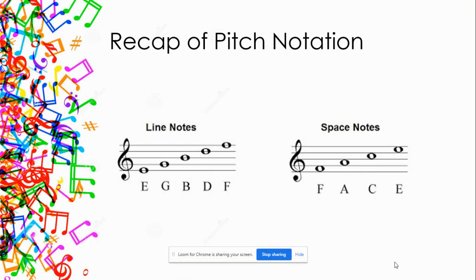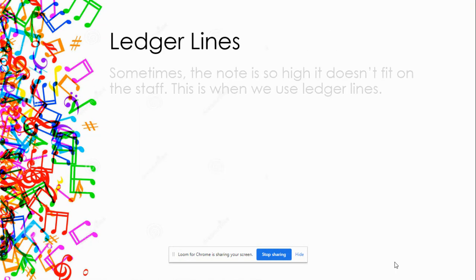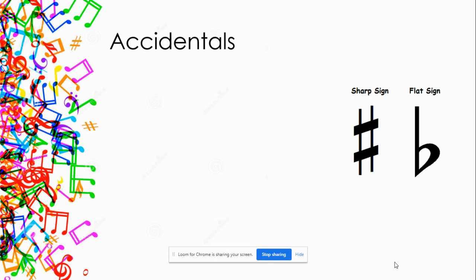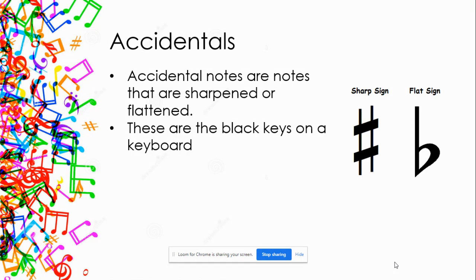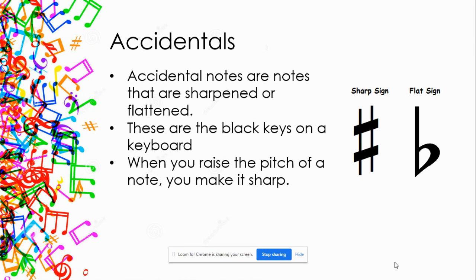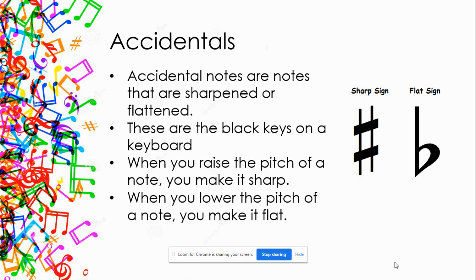Before we start our first task, let's talk about accidentals. Accidentals are those sharp and flat signs. Accidental notes are notes that have been sharpened or flattened — these are the black keys on the keyboard. All the white keys are simply A, B, C, D, E, F, G — not sharps or flats. The black notes in between are sharps and flats. When you raise the pitch of a note, you make it sharp; when you lower the pitch, you make it flat.